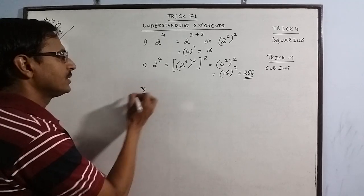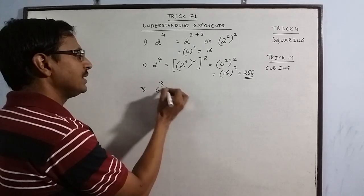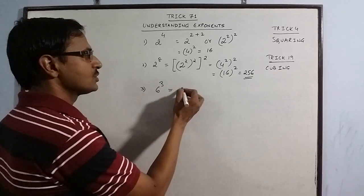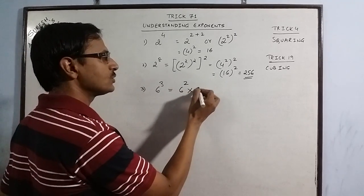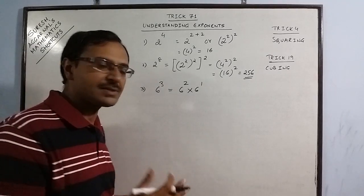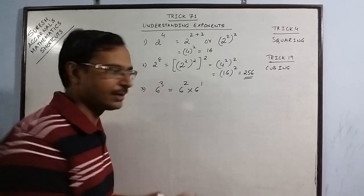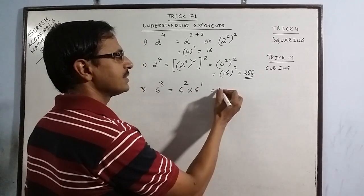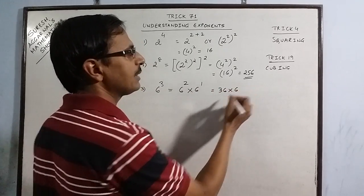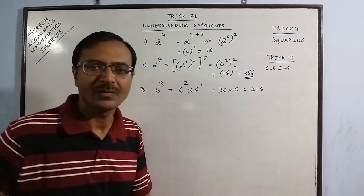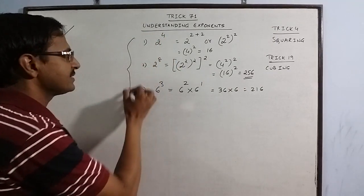Say we have 6 raised to power 3. Knowledge of squares can help you find the cube also. Just write it as 6 raised to power 2 into 6 raised to power 1. Just break the powers, 3 is 2 plus 1. If you know that square of 6 is 36, then you have to just multiply 36 by 6, so 216. These are the fundamental examples.